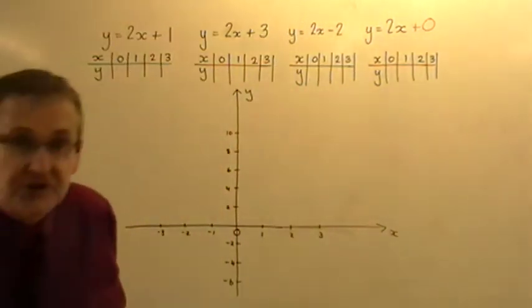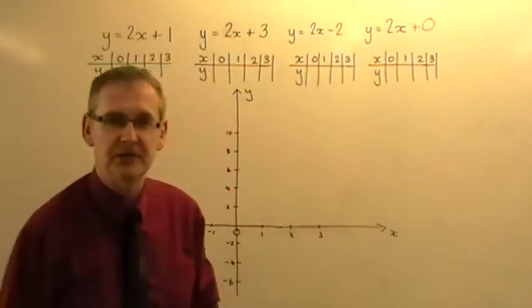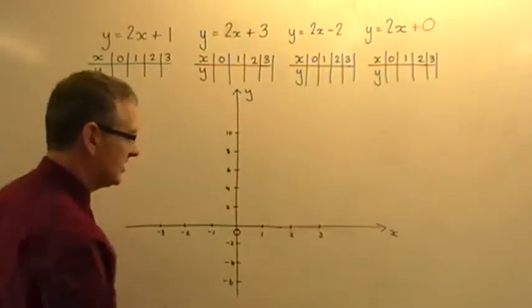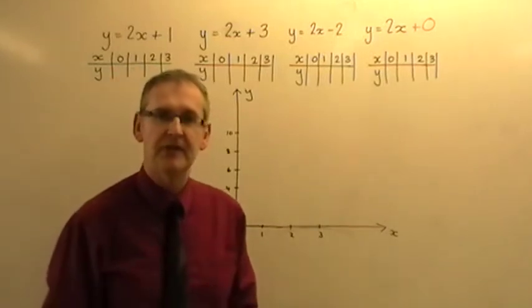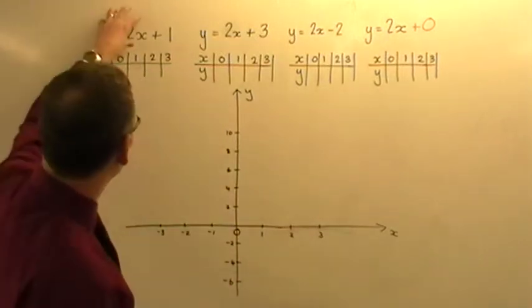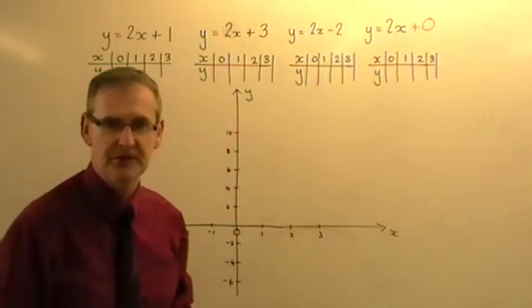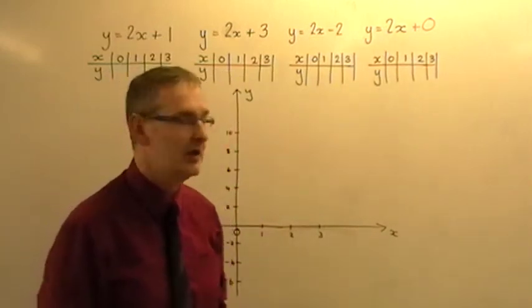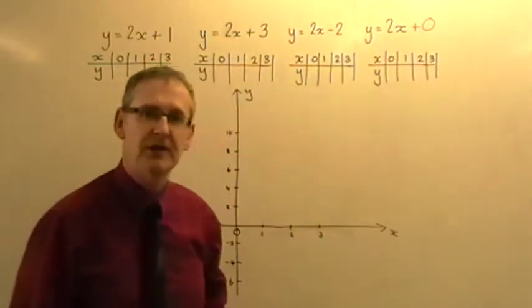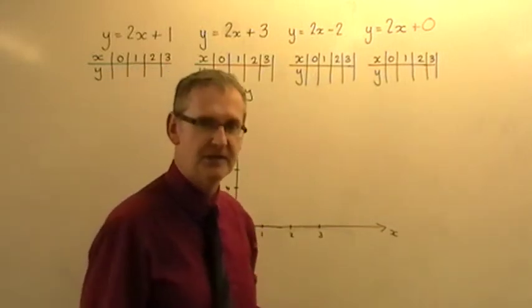What I'm going to do is create a table of values for each one of these four straight line graphs and plot them accurately on these axes. We'll see that there are some things about the straight lines that are the same, which is the connection with y equals 2x at the beginning, and some things that are different. The different things that occur must be because of the difference in the number on the end of each equation. So let's get cracking and work out the actual values.